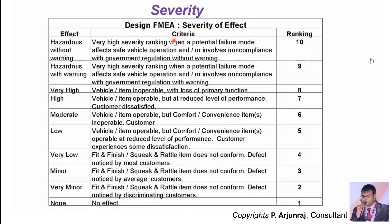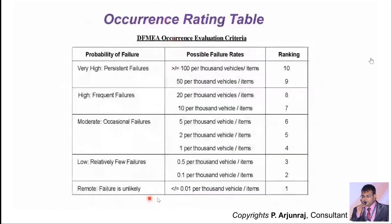With respect to the Occurrence rating, it also ranges from 1 to 10. Ratings are given based on the probability of failure. If there are persistent failures — for example, a failure rate greater than or equal to 100 per thousand vehicles or battery packs — you give a ranking of 10. If you get 50 failures per thousand vehicles, the ranking is 9.